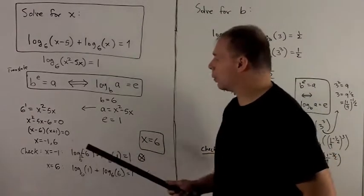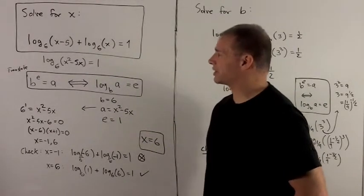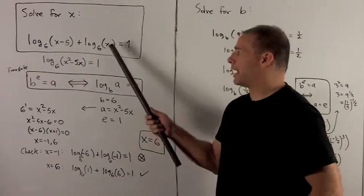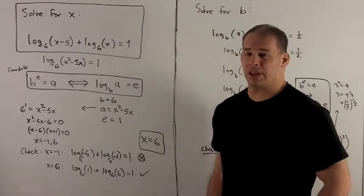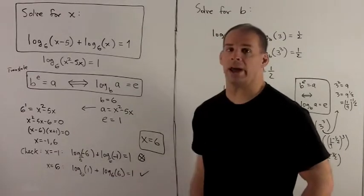I put minus 1 into the original equation, and already you see we have a minus 6 inside of our first logarithm, a minus 1 in the second one, so this is no good. I have to throw x equals minus 1 away.